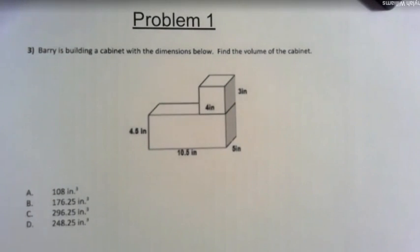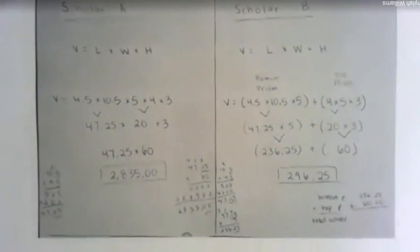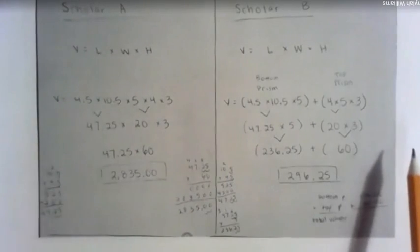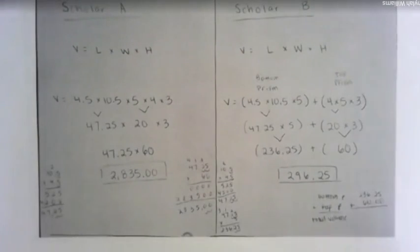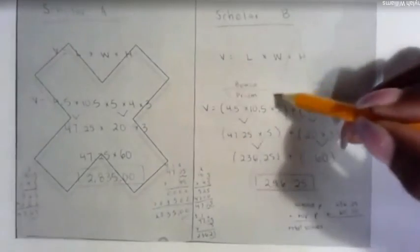Hopefully you worked the problem out yourself. Now we're going to go over two pieces of work from two different scholars that tried to solve the same problem. What I want you to do is an error analysis. That means compare the work that you did to the work you see here on the page and determine if you agree with scholar A on the left or scholar B on the right. Ask yourself, what did both of these scholars do and who solved correctly? Who do I agree with and why? When you have the answer to that question you can unpause this video. Go ahead and pause the video now. Take a minute to analyze the work.